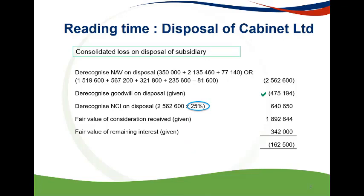IFRS 10, paragraph B98 requires that the assets and liabilities of the subsidiary on 31 May 2018 be de-recognized. De-recognize the goodwill on initial acquisition — this figure was given. Remember, NCI is measured at proportionate share and not at fair value and therefore does not share in goodwill. De-recognize NCI at their proportionate share percentage of the net asset value. Recognize the fair value of the remaining interest and the consideration received on disposal — these figures were also given. The resultant consolidated loss is recognized in profit and loss. Note that the signs used in this calculation differ from those used in the disposal note.